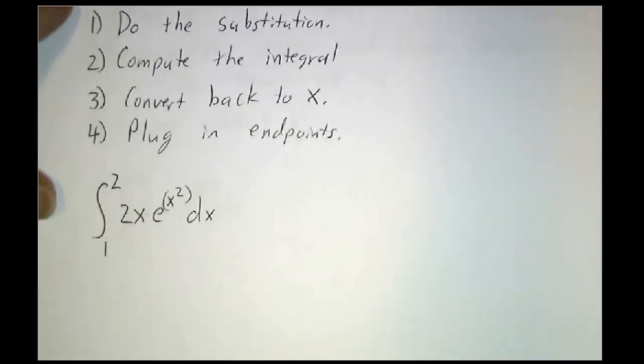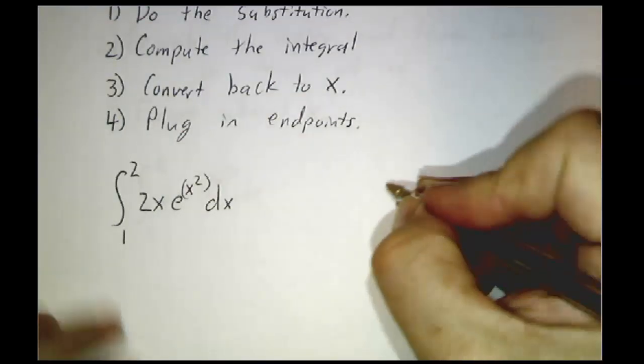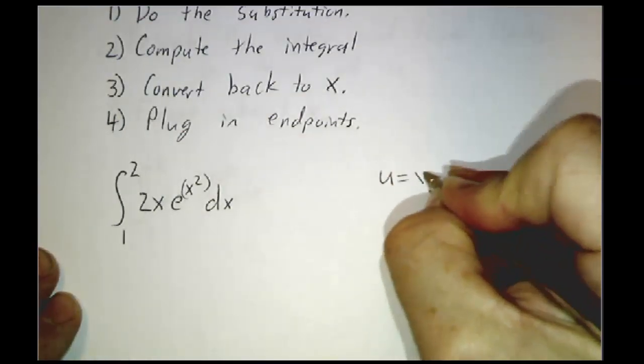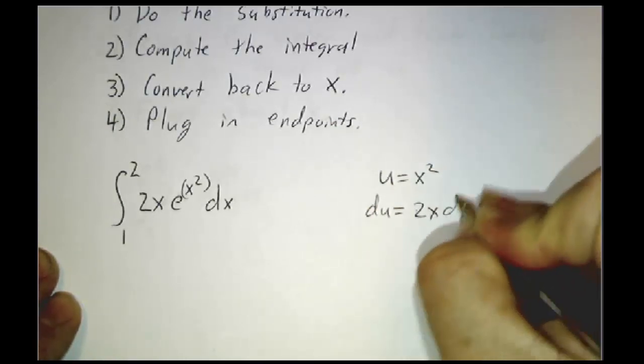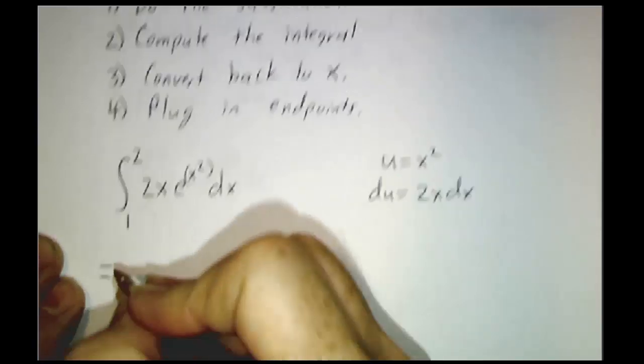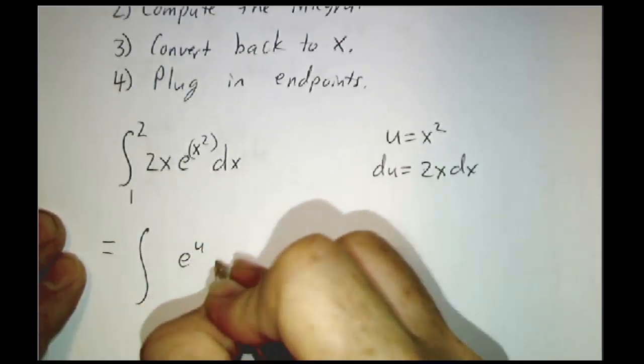For example, suppose we wanted to figure out the integral from 1 to 2 of 2x e to the x squared dx. We would let u be x squared. du would be 2x dx.